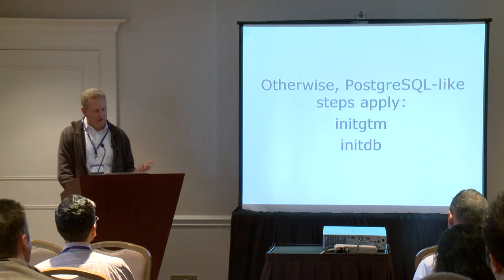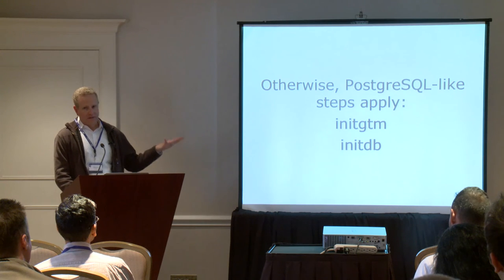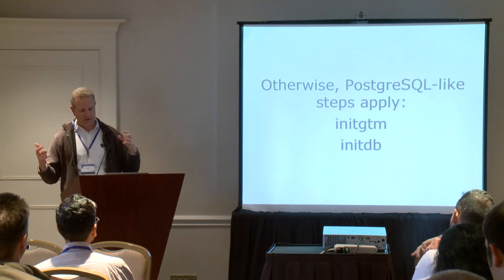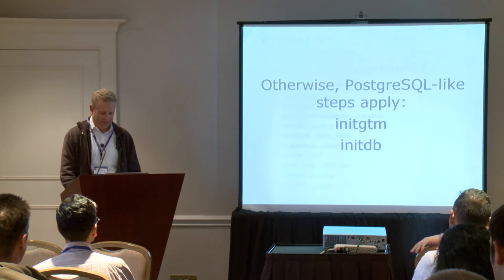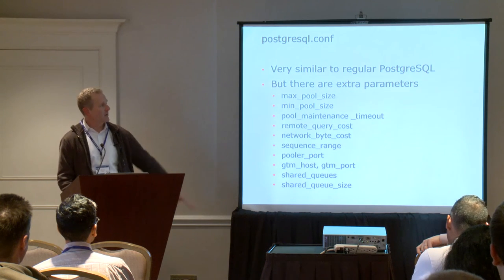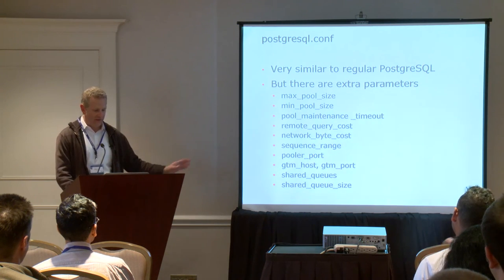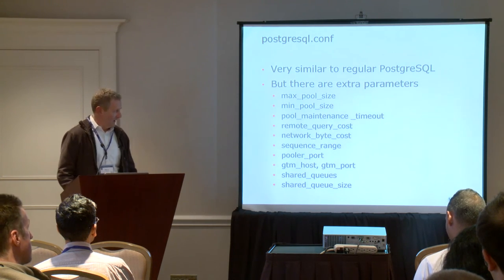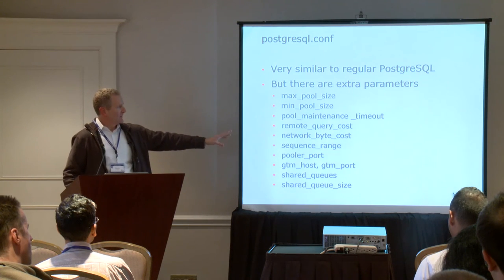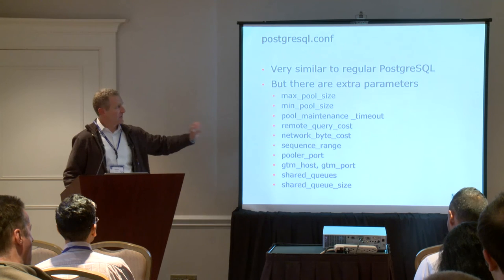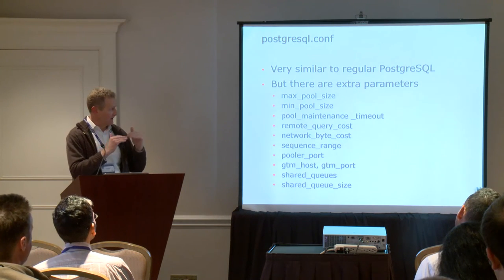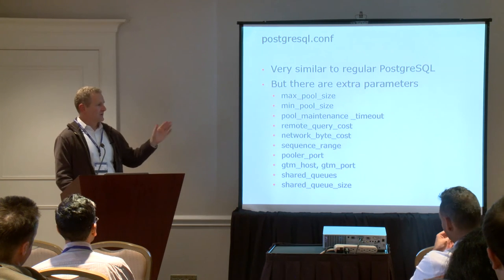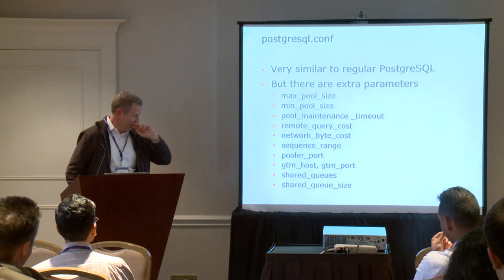If you want to do it manually, which I strongly discourage, there are initdb-type steps — there's initgtm for GTM. You can manually configure each component but it's cumbersome. We have extra config parameters that you don't see in Postgres. Since we take advantage of pooling, you can set pool sizes and timeouts. For planning, we cost out how expensive it is to ship data across the network, since we have data nodes talking to each other. We have some costing parameters — if your network is particularly slow, you can make that more expensive.